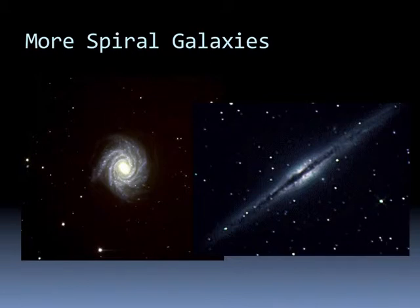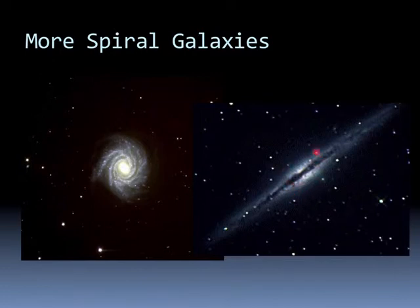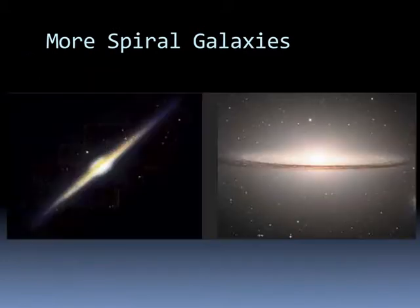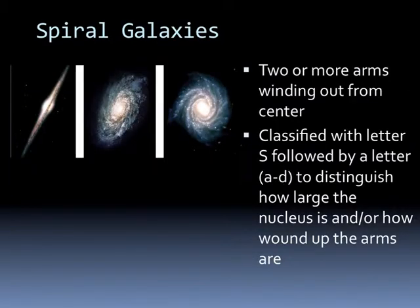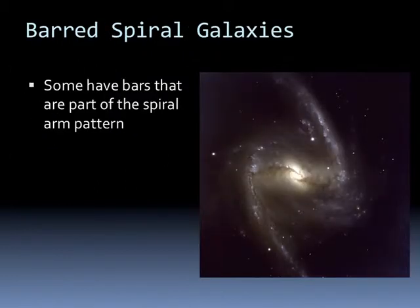Here are a few more spiral galaxies. This one has many different arms. This spiral galaxy we're looking at edge-on, and notice there's some extinction due to dust hiding a lot of what it is, but we can see the nuclear bulge and the disk of the galaxy. This one is slightly tilted to us and is actually called the Sombrero galaxy — kind of looks like a sombrero. Spiral galaxies are classified with a letter S, followed by a letter A through D, to distinguish how large the nucleus is or how wound up the arms are.